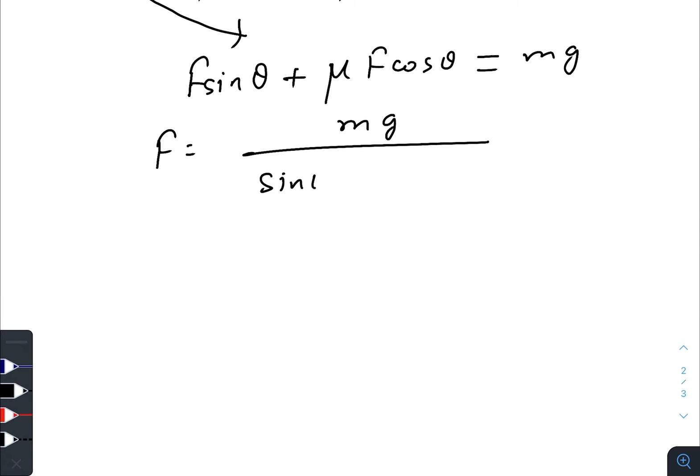So F equals mg divided by sin θ plus μ cos θ. For minimum value of F, we need the maximum value of this denominator. So we will just differentiate it with respect to θ and equate it to zero.